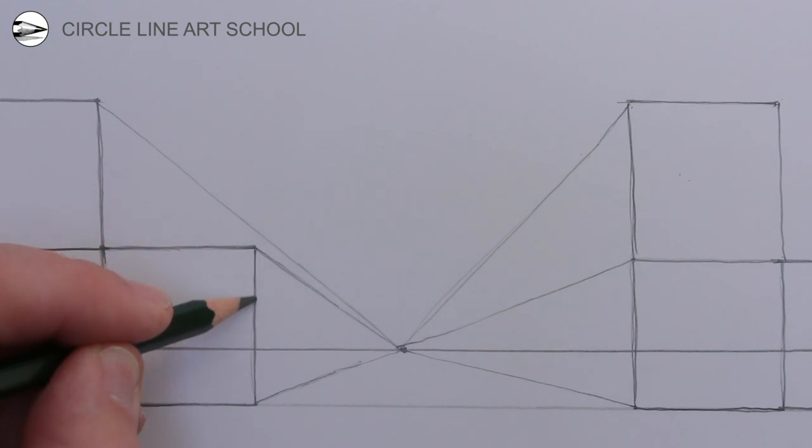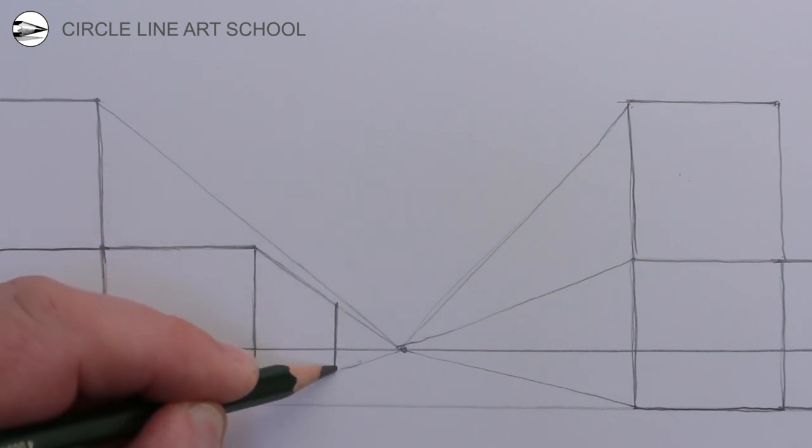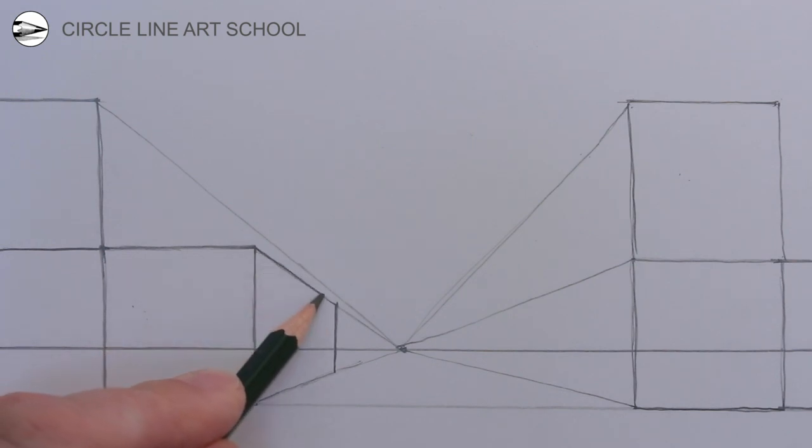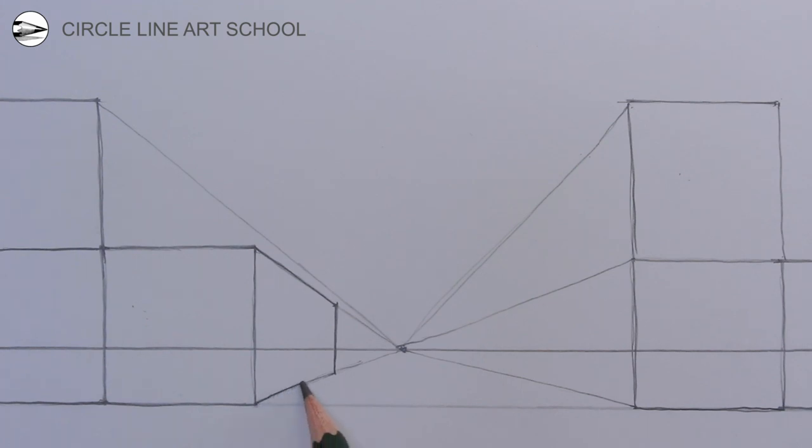Next using some vertical lines we can choose how long each of these container boxes are. They need to be not too long and not too short. Remember it's a very long way all the way to the horizon from where we're looking.